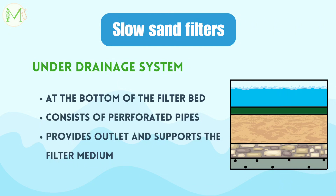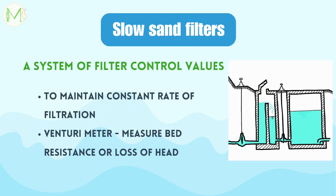Beneath the sand bed, we have a layer of graded gravel for supporting the sand above. The depth of this layer is about 30 to 40 centimeters. This prevents the fine grains from being carried away into the drainage pipes. Next, we have an under-drainage system at the bottom of the filter bed, consisting of perforated pipes providing an outlet for the filtered water and supporting the filter medium. Following this, we have a system of filter control values. The filter control value maintains a constant rate of filtration. A venturi meter is used to measure bed resistance or loss of head. When the resistance builds up, the operator opens the regulating valve to maintain a steady rate of filtration.